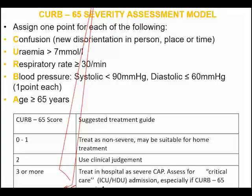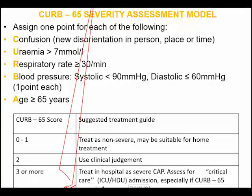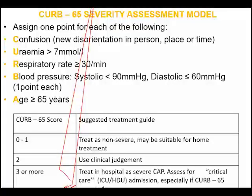The C in CURB-65 stands for confusion. You need to ask the patient if they know who they are, where they are, and what time it is. If they fail any one of those tests, it means they are confused. For example, if they cannot identify a relative, cannot state their location, or do not know what time of day it is, they are considered confused.